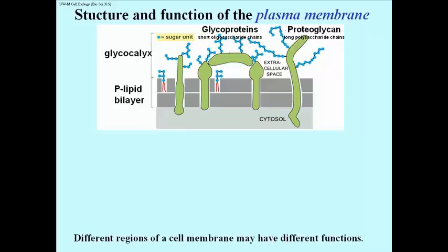We have several kinds of structures that are sugar coated, or that have sugars attached. There are short oligosaccharide chains attached to proteins, and these are called glycoproteins.